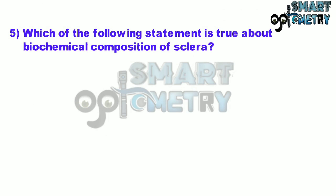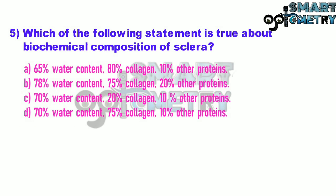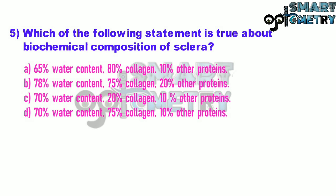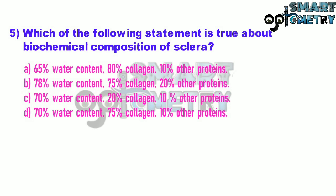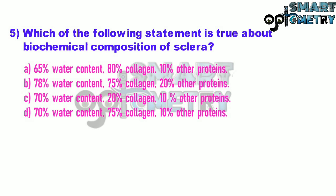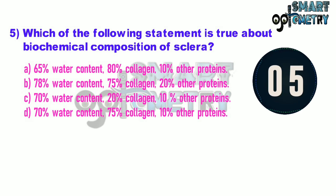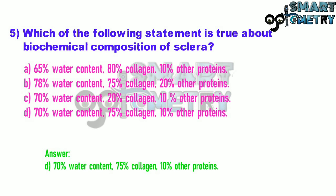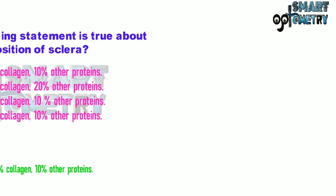Question number five: which of the following statements is true about the biochemical composition of the sclera? A: 65% water content, 80% collagen, and 10% other proteins. B: 78% water content, 75% collagen, and 20% other protein. C: 70% water content, 20% collagen, 10% other proteins. D: 70% water content, 75% collagen, and 10% other proteins.